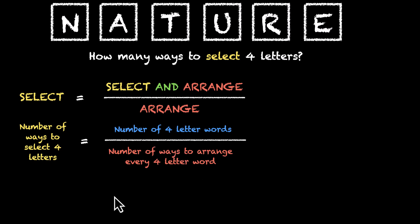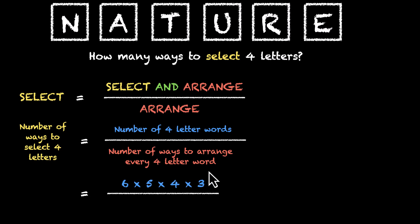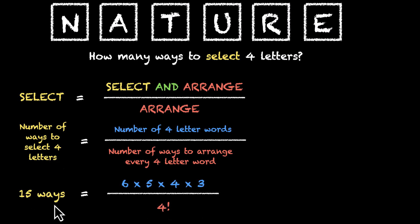The numerator is equal to 6 × 5 × 4 × 3. The first letter can be picked in six ways, the next in five, then four, then three. But the order does not matter when we're selecting, so we divide by the number of ways to arrange every four-letter word — that's four factorial. Six times four is 24, four factorial is also 24, so this equals 5 × 3, that's 15 ways.